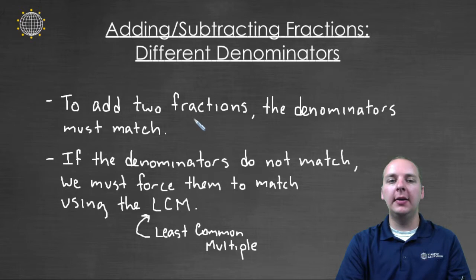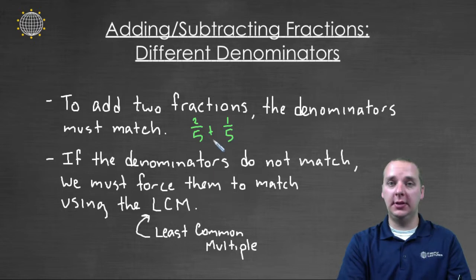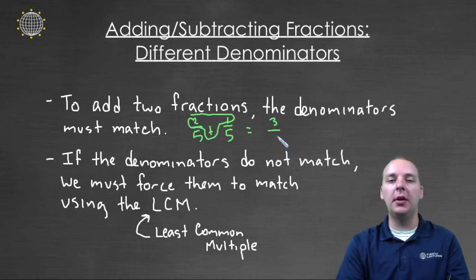I'll give you an example. If you had two-fifths plus one-fifth, when the denominators match together, then the arithmetic happens in the numerator, and you would just take two plus one, and that would be your new numerator which is three, and you would keep your common denominator of five. Two-fifths plus one-fifth would equal three-fifths.